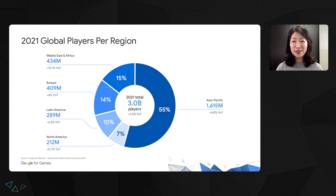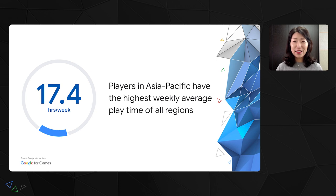Today, there are 3 billion users playing games across the globe. The gaming population continues to grow thanks to better internet infrastructure, affordable smartphones, and mobile data plans. Asia Pacific is home to three of the top four gaming markets, which together have more than half of the world's online population. APAC is also a mobile-first market. Our consumer research conducted last year showed that gamers in APAC have the highest weekly average playtime of all regions at 17.4 hours per week.